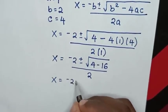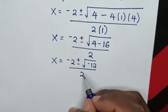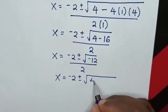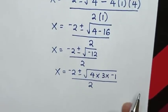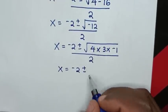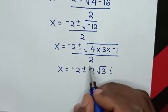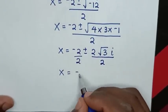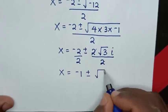So x = (-2 ± √(-12)) / 2. Now √(-12) = √(4 × 3 × (-1)) = 2√3 · i. Dividing each part by 2 gives x = -1 ± √3 · i.